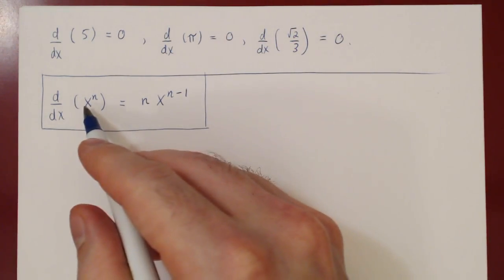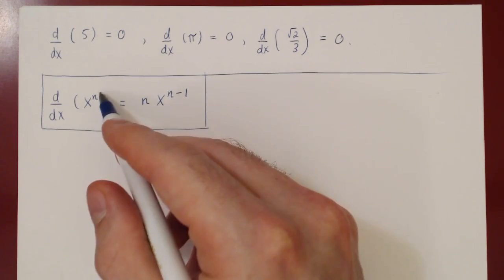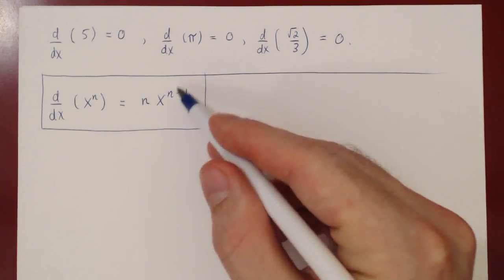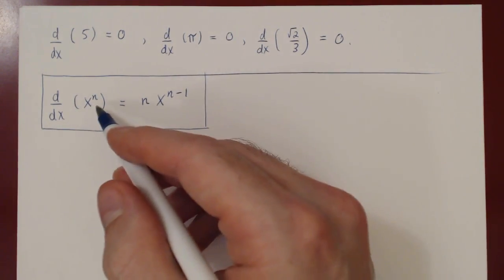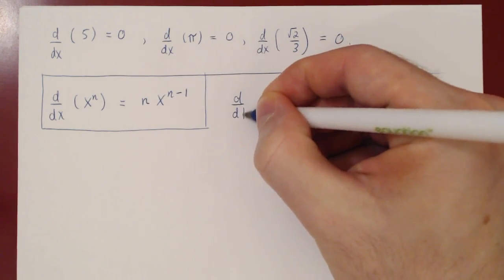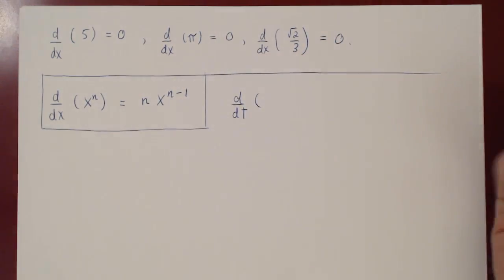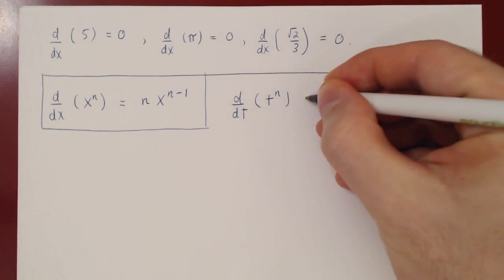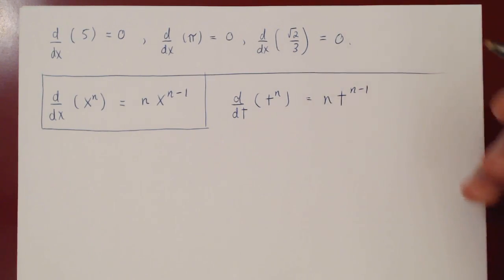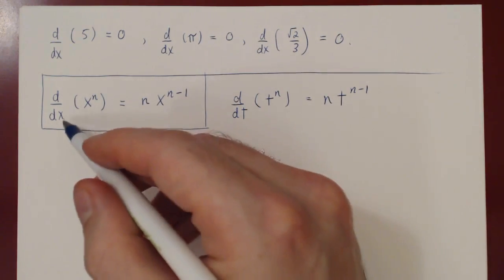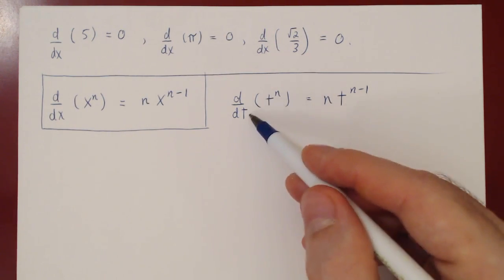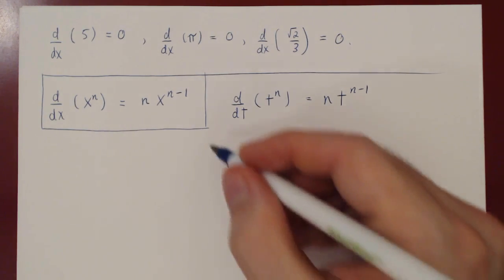To differentiate with respect to x a power of x, all you have to do is bring the power down and subtract 1 from the exponent. You can replace x by any other variable — you could differentiate with respect to t; if the function is t to the n, you're going to have n times t to the n minus 1. x is an arbitrary choice of variable, so you can change the variable to t, to u, or any other variable of your choice.